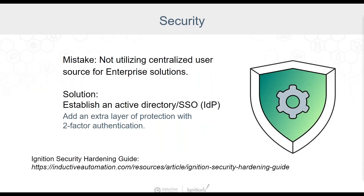Using built-in or internal database hybrid security is well suited for single gateway solutions. When you get into enterprise architectures with multiple gateways, those user sources are not going to be synced — having an external source such as Active Directory for authentication is ideal. Adding or removing a user and assigning roles is then centralized and only has to be done in one place. Also, consider establishing Active Directory single sign-on security, and add an extra layer of protection by using two-factor authentication.